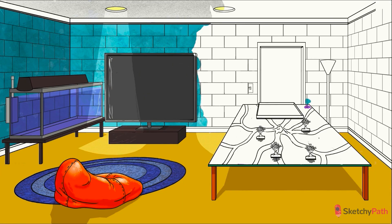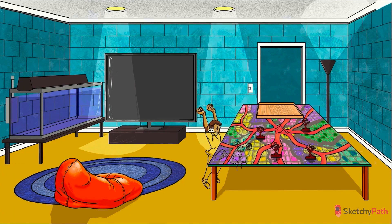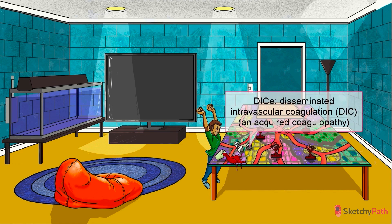Disseminated intravascular coagulation, abbreviated DIC, is represented in this scene by a roll of the DIC dice. We're getting a little ahead of ourselves here — you can't just jump right into D&D. I'll take you through it step by step, starting with the most fun part: creating your character. Next step? Coming up with an intricate backstory. And in this scene, we're featuring the story of disseminated intravascular coagulation.